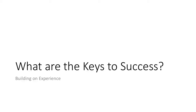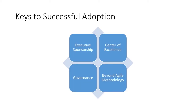What are the keys to success? Based on the experience of the most successful organizations, there are four items common to success: executive sponsorship, a center of excellence, governance, and the use of Beyond Agile methodology.